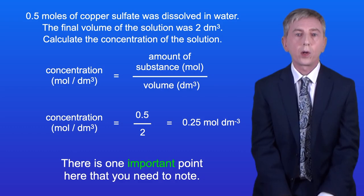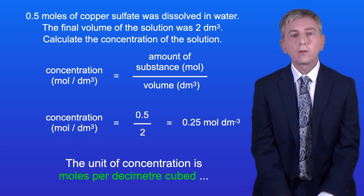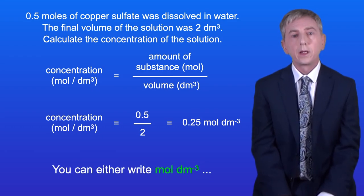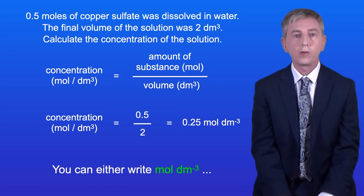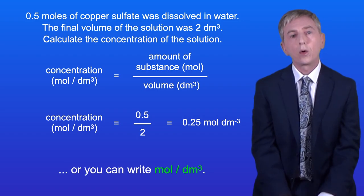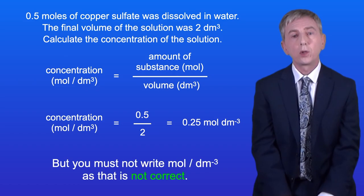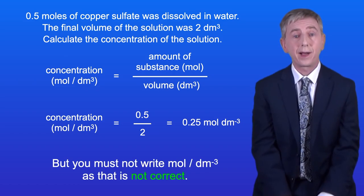There is one important point here. The unit of concentration is moles per decimetre cubed, and there are two ways to write this. You can either write mol dm⁻³, or you can write mol/dm³. But you must not write mol/dm⁻³, as that's not correct.